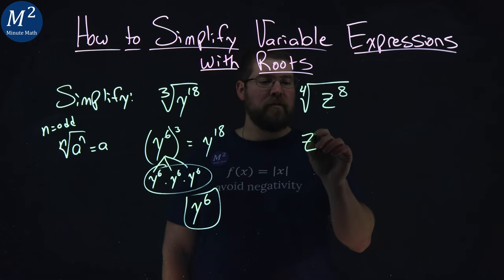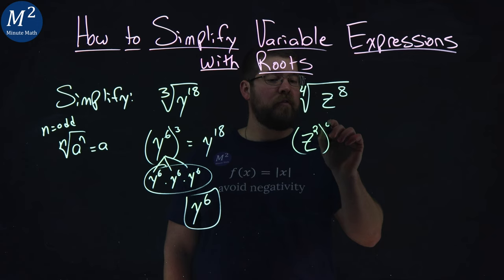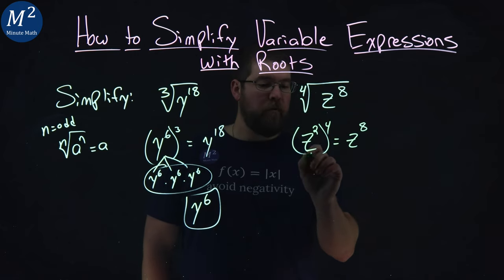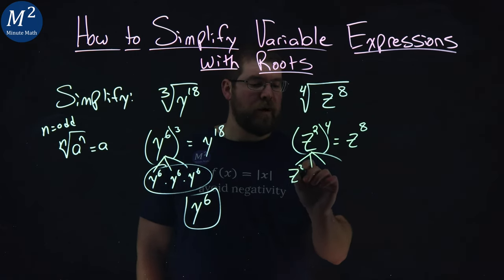Well, if I have z squared all to the fourth power, that's equal to z to the eighth power, right? Two times four is 8. So again, we have four pairs of z squared.